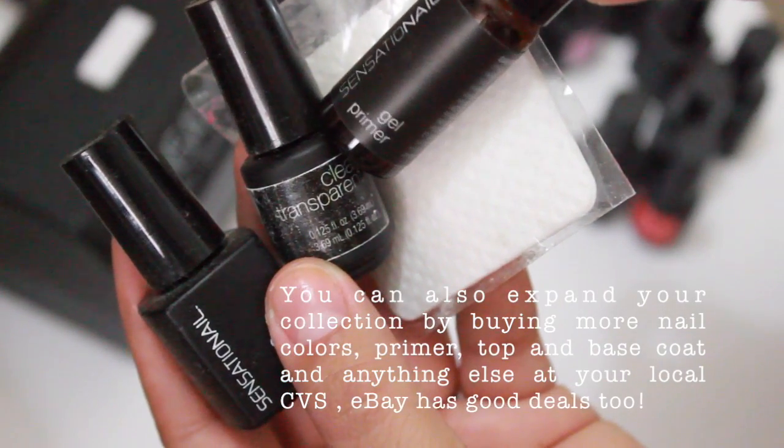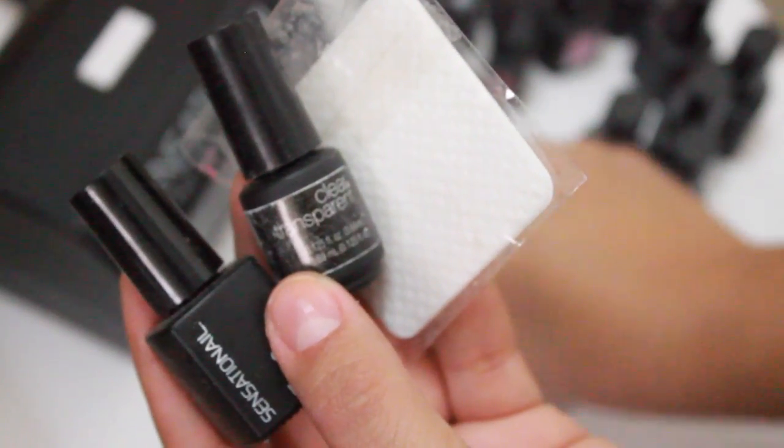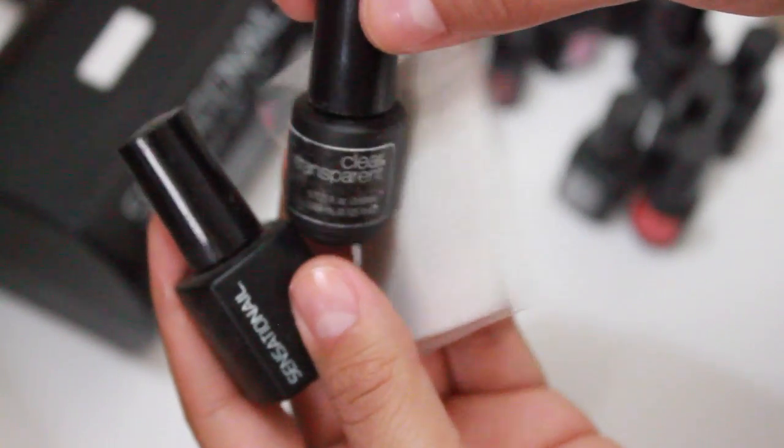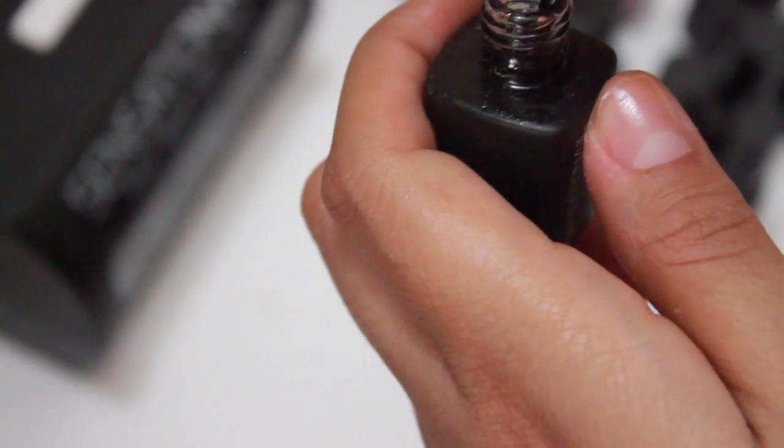So it's going to come with this gel primer - you're going to apply that first - then it comes also with this clear, so that's the base and the top coat, and then it comes with a solution and lint-free wipes as well as the Sensational LED light.